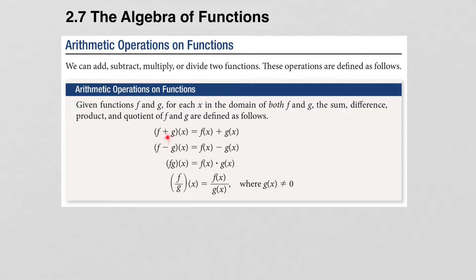The function (f+g)(x) is found by adding f(x) and g(x). The function (f-g)(x) is found by subtracting f(x) and g(x). fg(x) is found by multiplying f(x) times g(x). And (f/g)(x) is found by dividing f(x) by g(x). When dividing two functions, we need to restrict the denominator from being equal to zero.